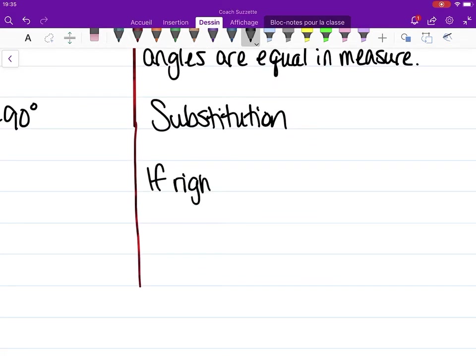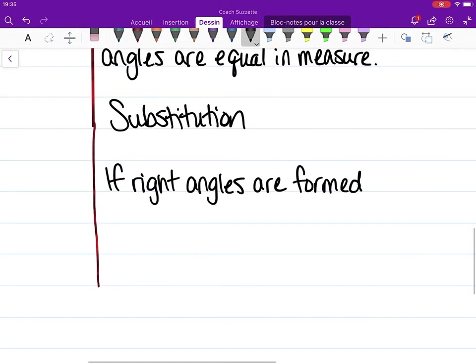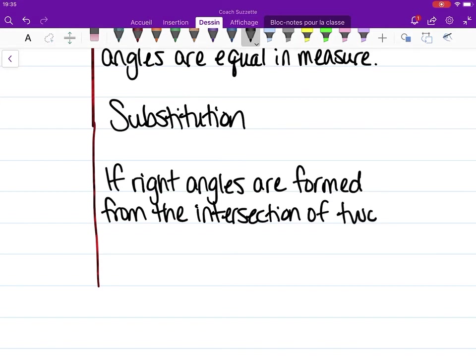If right angles are formed from the intersection of two lines, then the lines are perpendicular.